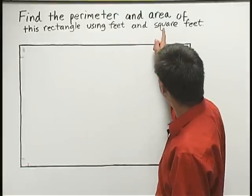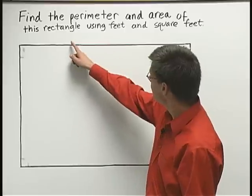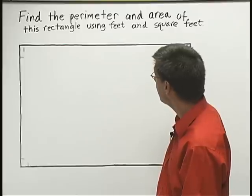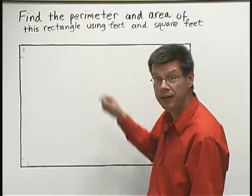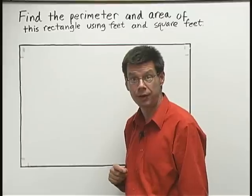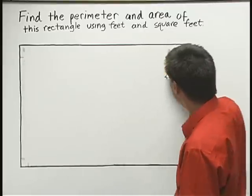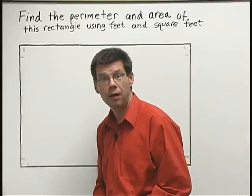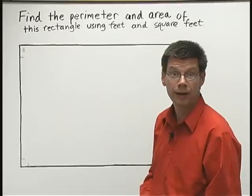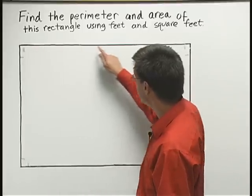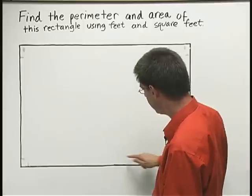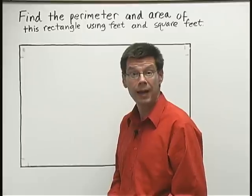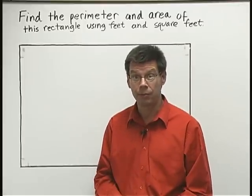Find the perimeter and area of this rectangle using feet and square feet. First, we're just going to talk about finding the perimeter by measuring. Here's our rectangle right here on the whiteboard that we're going to be working with. The perimeter of a rectangle is a measure of the distance all the way around the outside of the rectangle. We can get the perimeter by adding up the lengths of the four sides of the rectangle.